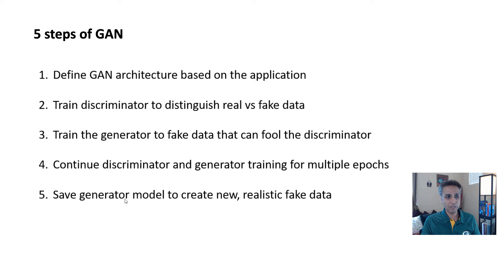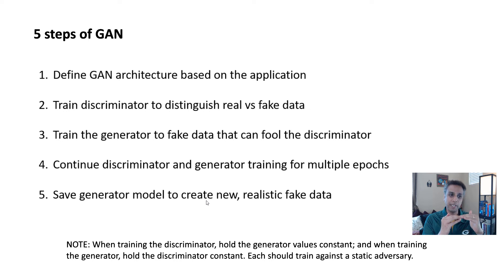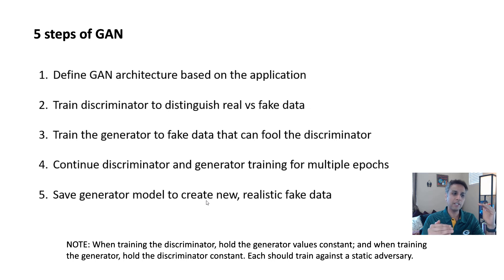One important thing: when training the discriminator, hold the generator values constant — you don't train them continuously together. When training the discriminator, the generator values are constant. And when training the generator, the discriminator is constant. Each should train against its adversary so they can get better.